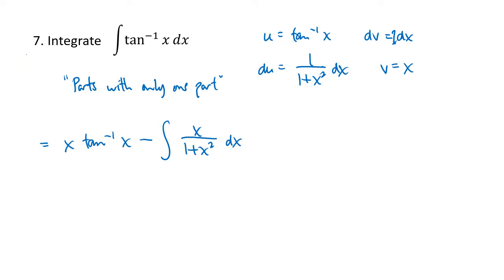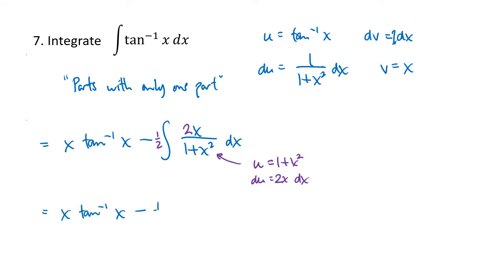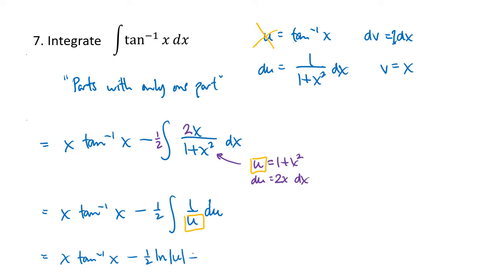The inverse trig function has gone away, so our integral is getting better. We're going to do a substitution: let u equal 1 plus x squared, so du is 2x dx. We've got an x in the numerator — we're just missing the 2 — so we put in the 2 as long as we also put in a one-half. We get x inverse tan of x minus one-half times the integral of 1 over u du. Being careful about which u we're talking about, we get x inverse tan of x minus one-half natural log of the absolute value of u, plus c. Substituting back: x inverse tan of x minus one-half natural log of 1 plus x squared, plus c.